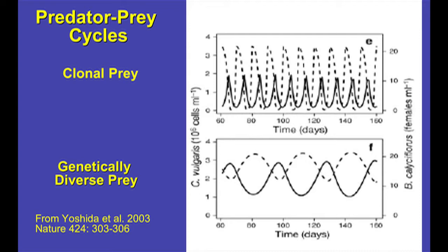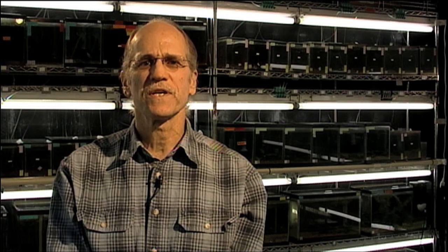Now this oscillation has been described in precise mathematical detail, and the mathematical description includes the amplitude of the swings, it includes the period of the periodicity of the oscillations, and it also predicts the degree to which the oscillations are offset from one another. You'll see that the peak in the prey abundance is somewhat offset from the peak in the predator abundance.